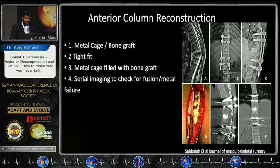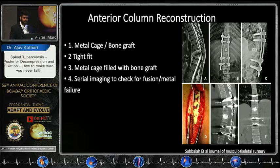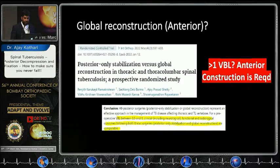With good anterior reconstruction, if there is not much deformity, you can do a short fusion — as in this case, where we managed with two levels above and below because the deformity was not significant and we could reconstruct anteriorly. This is one important point to understand. As a general consensus, we prefer to use long constructs.